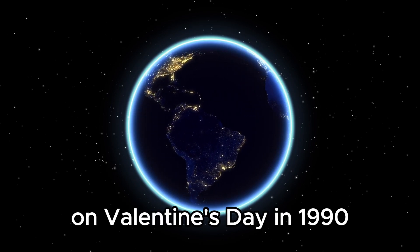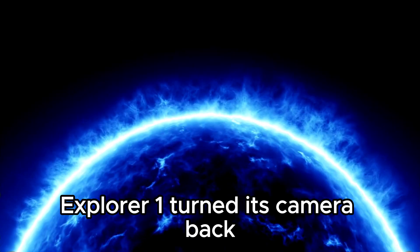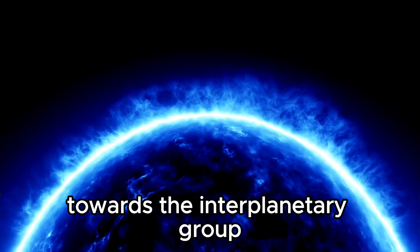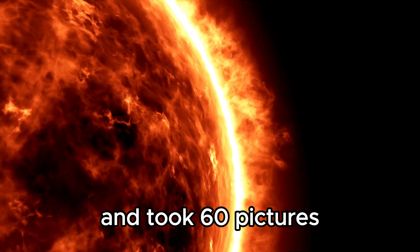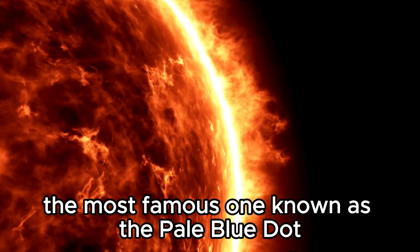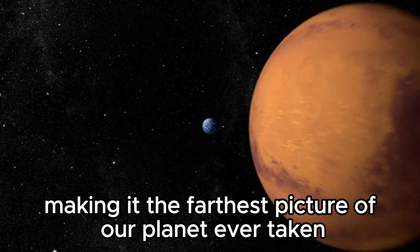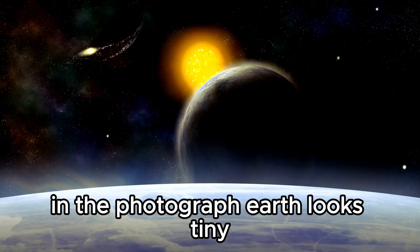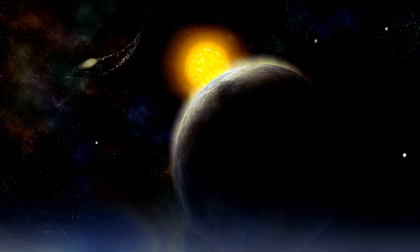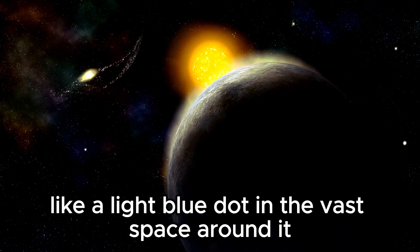On Valentine's Day in 1990, Explorer 1 turned its camera back towards the interplanetary group and took 60 pictures, the most famous one known as the pale blue dot. It was taken from 3.8 billion miles away, making it the farthest picture of our planet ever taken. In the photograph, Earth looks tiny, like a light blue dot in the vast space around it.